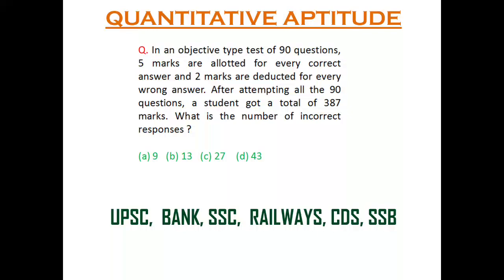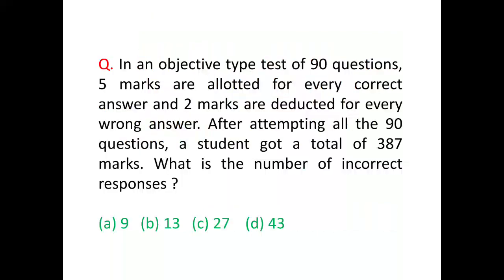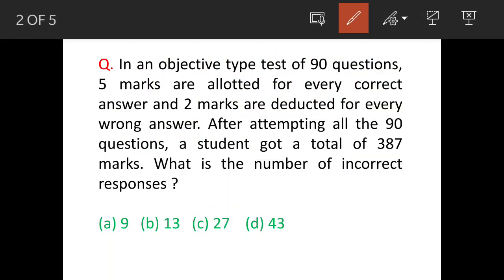We will see a question of quantitative aptitude. The question is like this: In an objective type test of 90 questions, 5 marks are allotted for every correct answer and 2 marks are deducted for every wrong answer.